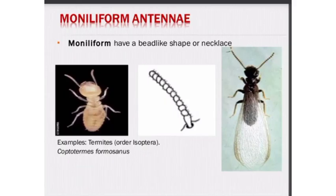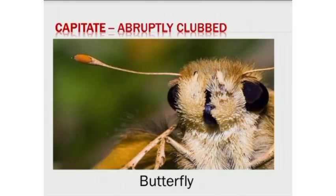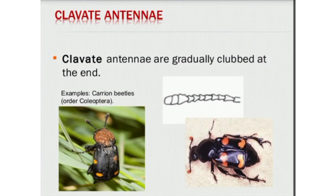Next is moniliform antennae, which have a bead-like shape or necklace form, found on termites from the order Isoptera. Next is capitate antennae, which are abruptly clubbed at the end. Examples are butterflies. Next is clavate antennae, which are gradually clubbed at the end. Examples are carrion beetles, from the order Coleoptera.